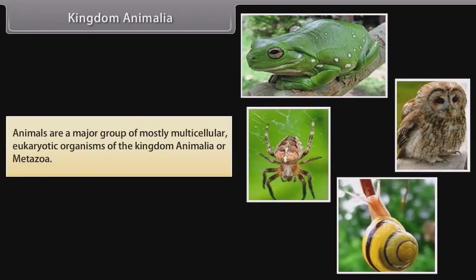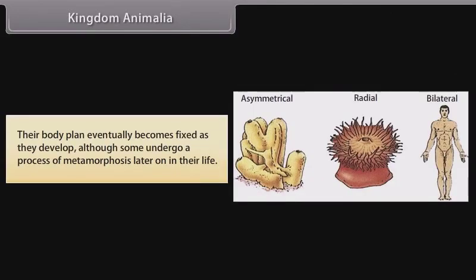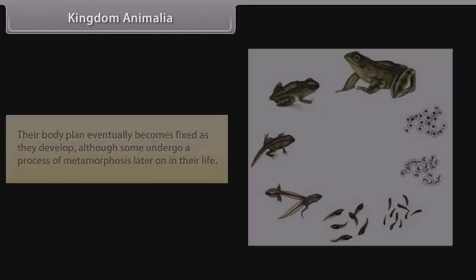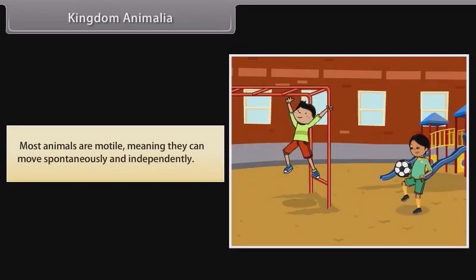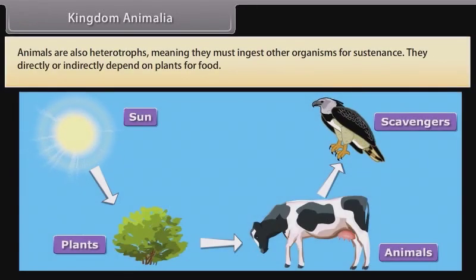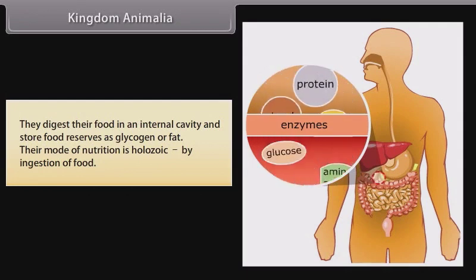Kingdom Animalia: Animals are a major group of mostly multicellular eukaryotic organisms of the kingdom Animalia or Metazoa. Their body plan eventually becomes fixed as they develop, although some undergo a process of metamorphosis later in their life. Most animals are motile, meaning they can move spontaneously and independently. Animals are also heterotrophs, meaning they must ingest other organisms for sustenance. They directly or indirectly depend on plants for food, and digest their food in an internal cavity, storing food reserves as glycogen or fat.